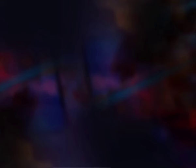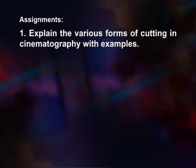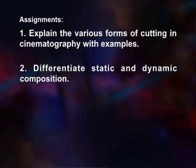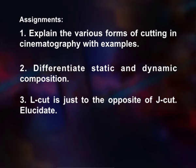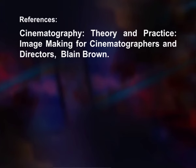Here are some assignments for you: explain the various forms of cutting in cinematography with examples; differentiate static and dynamic composition; and elucidate how L-cut is the opposite of J-cut. Some references: Cinematography Theory and Practice: Image Making for Cinematographers and Directors by Blain Brown; Understanding the Cinematography of Jeff Cronenweth; and Video Production Handbook by Jem Millerson. Thank you for watching this session. We will discuss another topic in another session. Till then, goodbye and good luck.